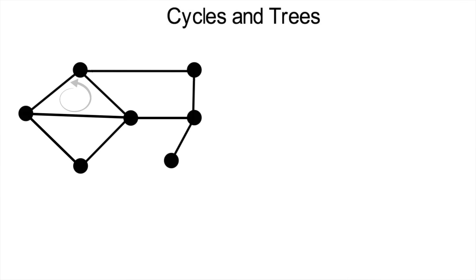Then one more quick graph theory example has to do with cycles and trees. This graph right here has a cycle, in fact it has multiple. There's a way to start somewhere and trace some path where you end at the same place without repeating any nodes or edges. This graph here has no cycles, which means it's called a tree.